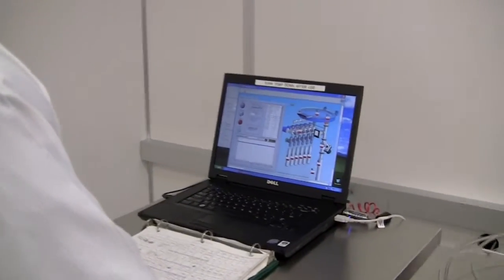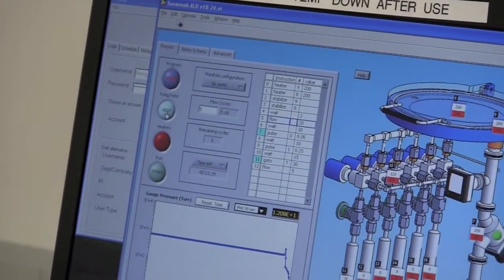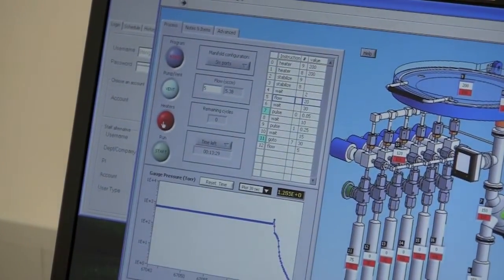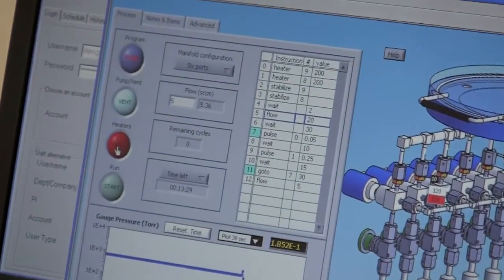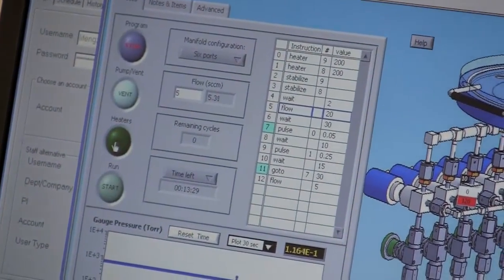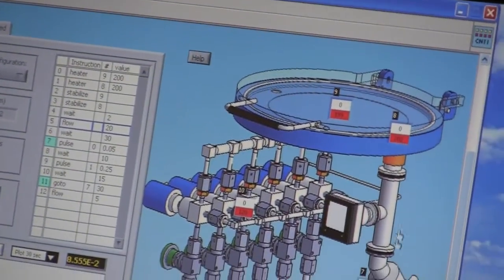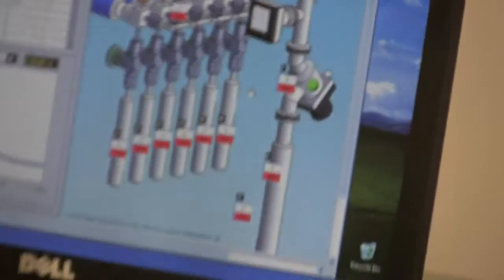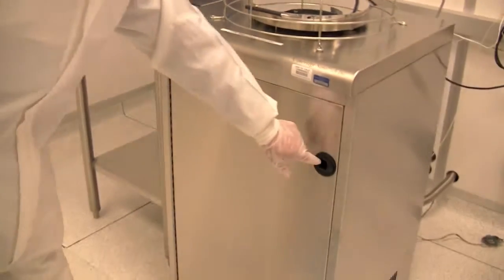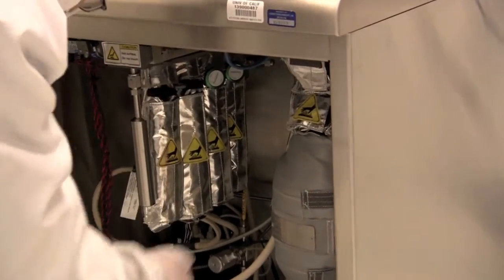And click the pump button to pump down the chamber. Click this red button to close all the heaters. And you see, the temperatures are set to zero. Last, don't forget to close the valve of the precursor bottle.